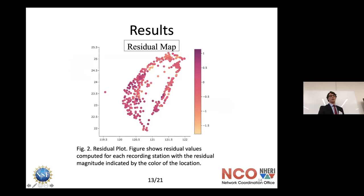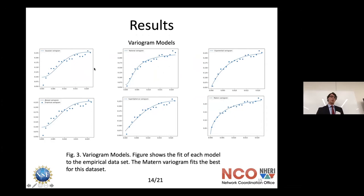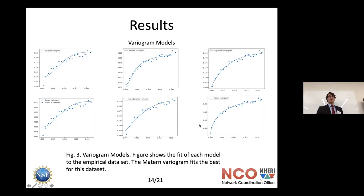Here are a couple of variogram models. This step is important for fitting our empirical data set to a model that can be input into the kriging algorithm. There's not much correlation in some of the models, but the Matérn variogram works really well. On the x-axis is the lag — essentially the distance between point pairs — and on the y-axis is the increasing deviance from the true value.